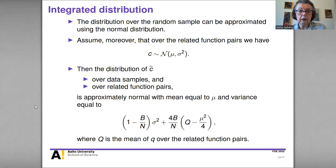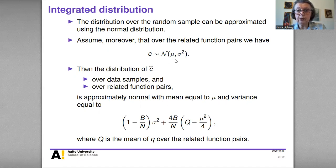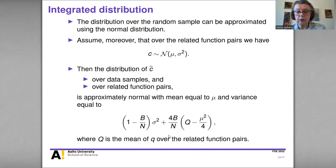These binomial and hypergeometric distributions can be approximated using the normal distribution with the given mean and variance over the random sample. Assuming moreover that C is normally distributed with mean mu and variance sigma squared, the integrated distribution over data samples and over related function pairs of C-hat is approximately normal with mean mu and variance containing Q-bar — the mean of Q, the probability that the functions are equal, averaged over the related function pairs.